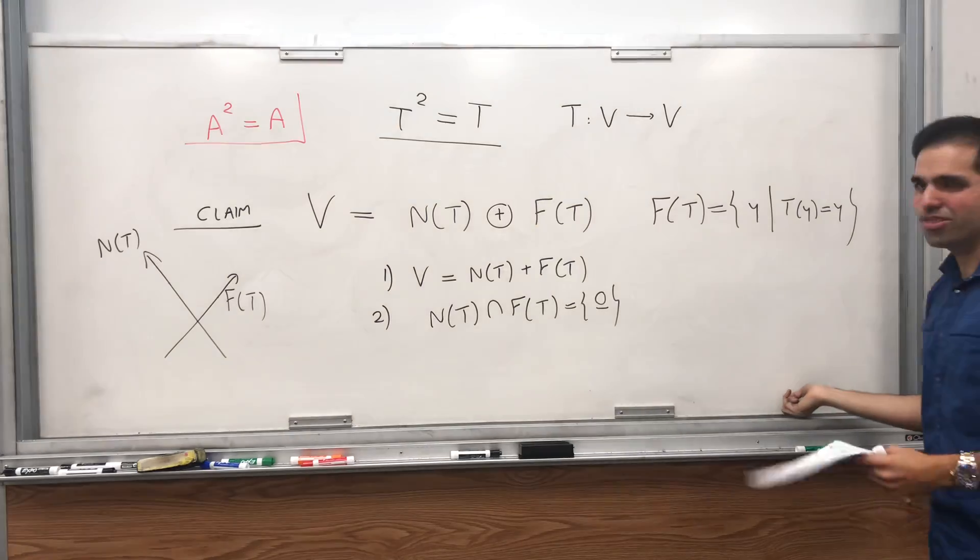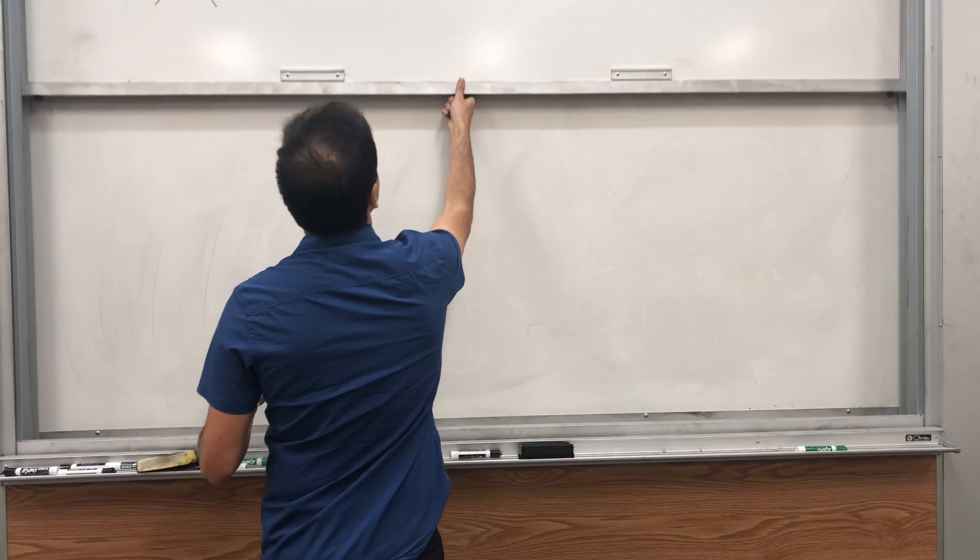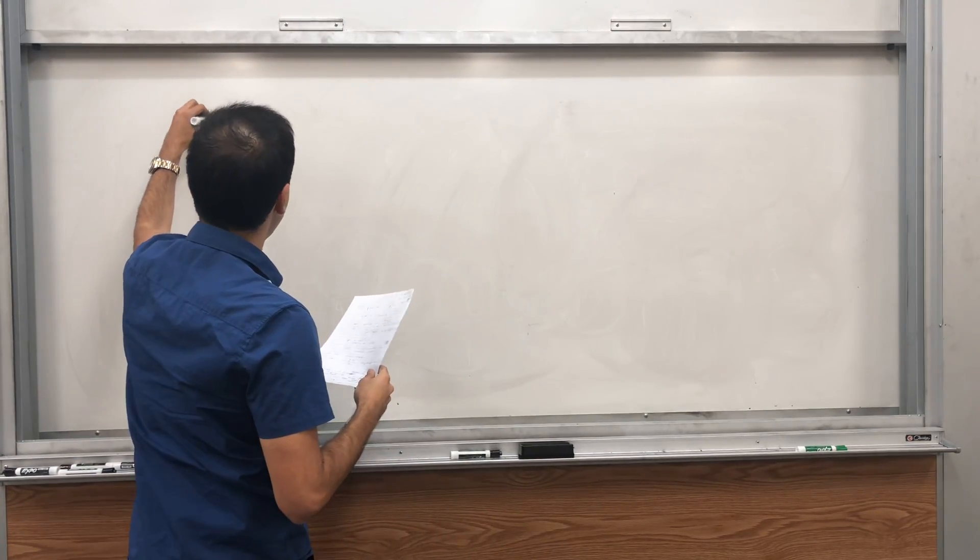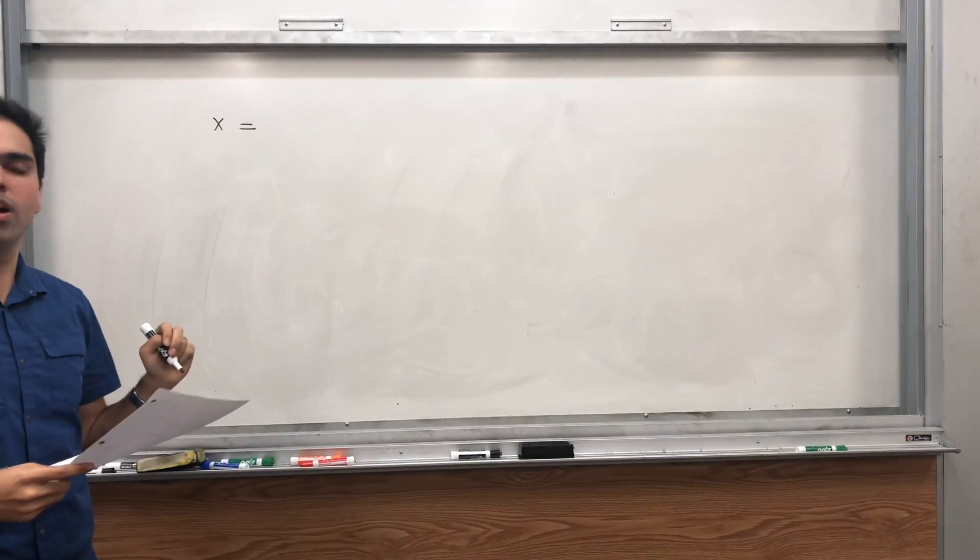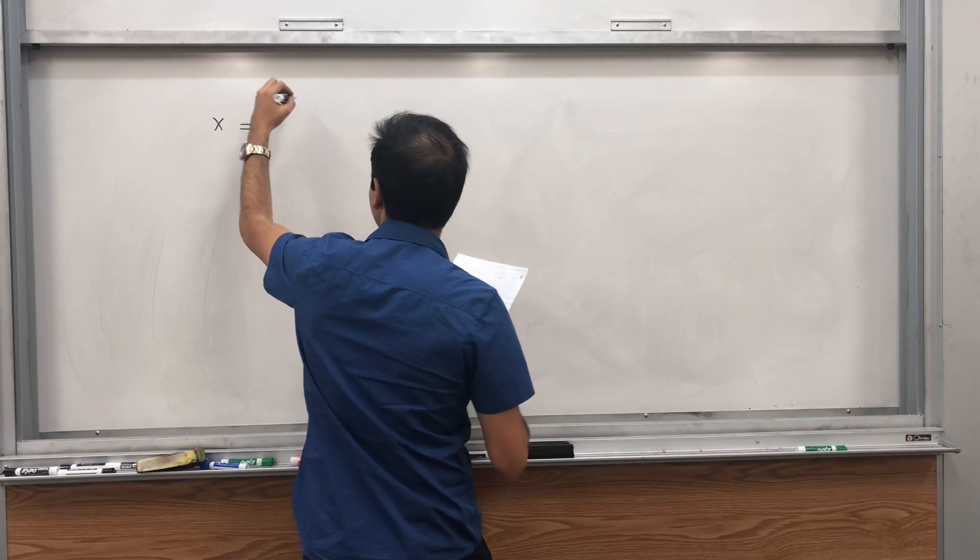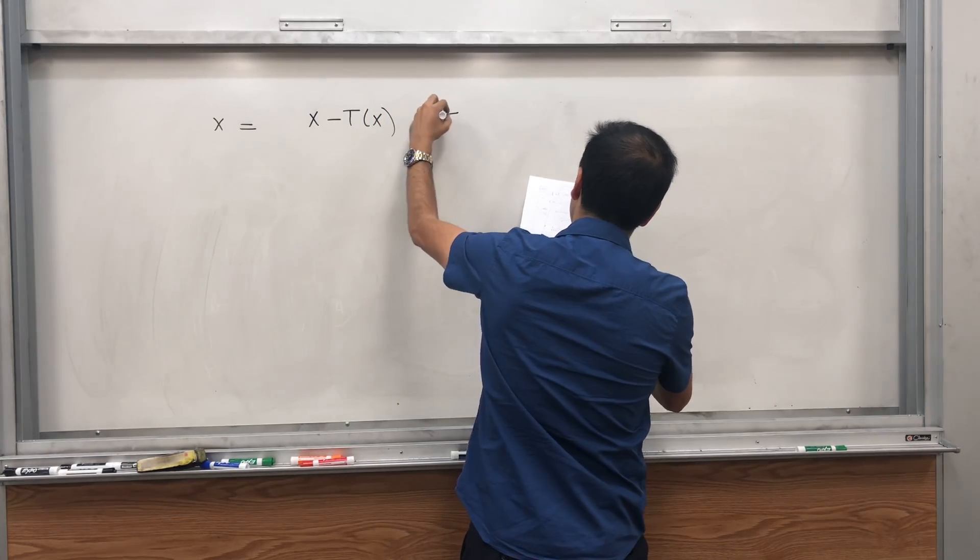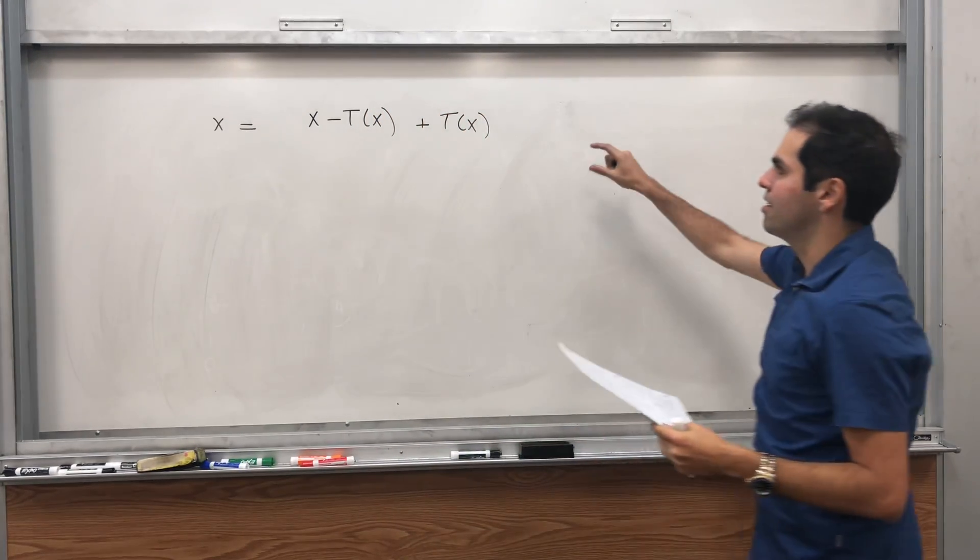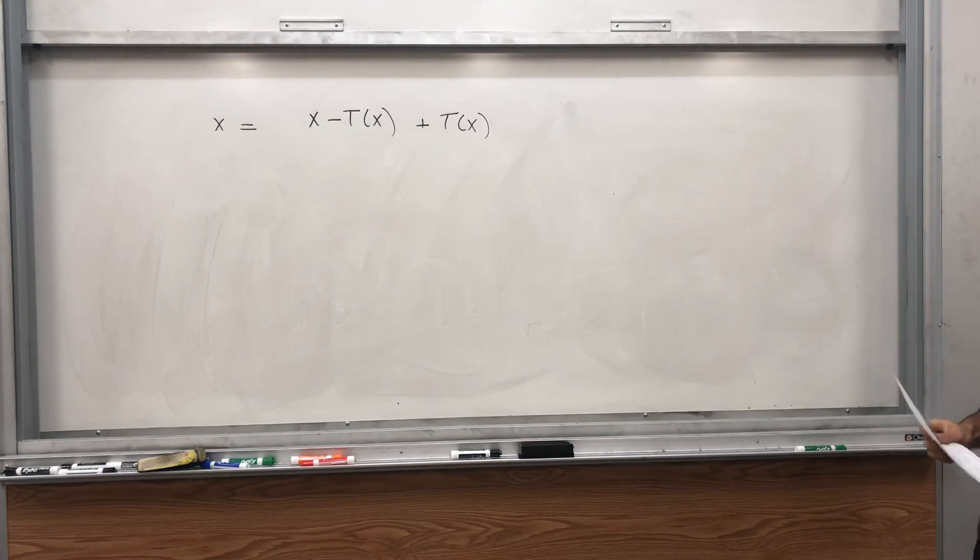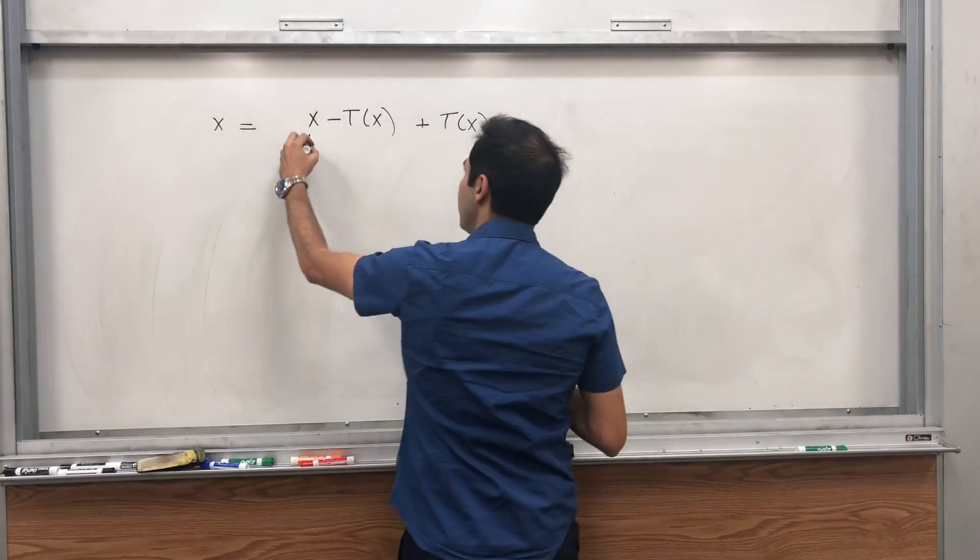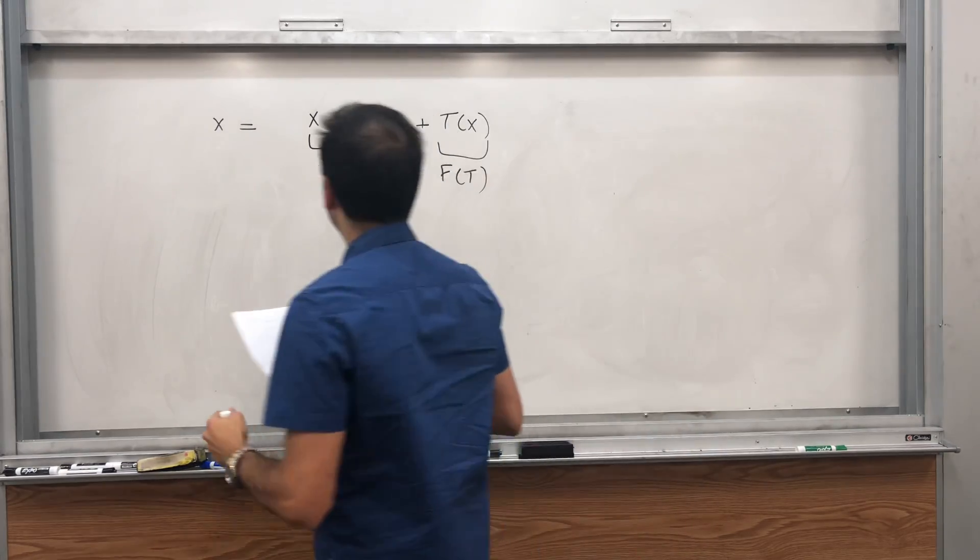Okay, let me show why this is true. So it's a very nice exercise in linear algebra. So why is any vector x in V the sum of two vectors, one in the null space and one in the fixed point space? It's because of this incredible calculation. You can write x as x minus T(x) plus T(x). So indeed, with this cancellation, you wrote x as a sum of two things. And all we need to show is that this is in the null space and this is in the fixed point space.